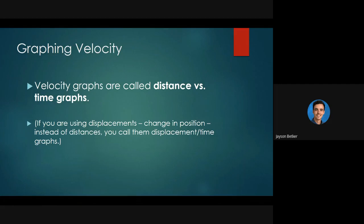I'll draw it out while I'm talking. You ended up only 30 away — you went 50 initially and then turned around and went backwards 20. The difference between the initial and final position is 50 minus 20, which is 30. Now, if I asked your total distance traveled, you would take 50 and add 20 — so your total distance is 70 but your displacement is 30. There's actually quite a big difference between displacement and distance.